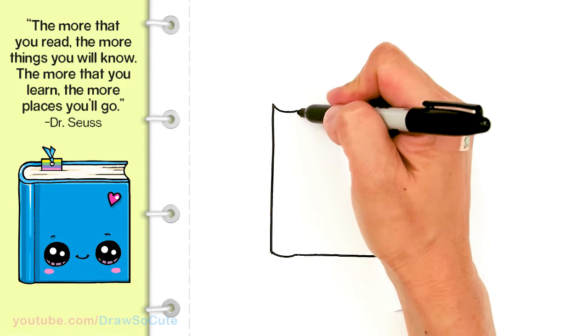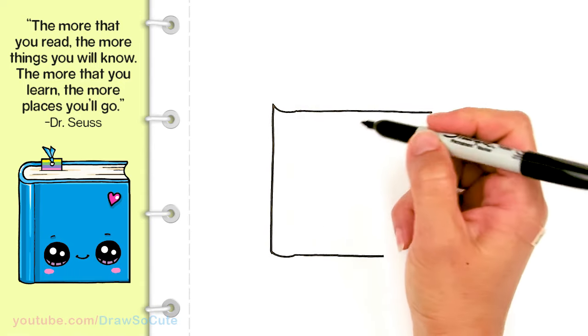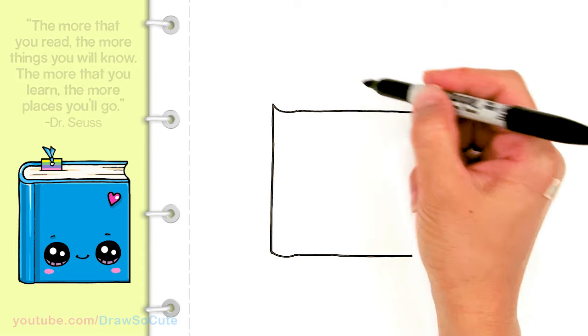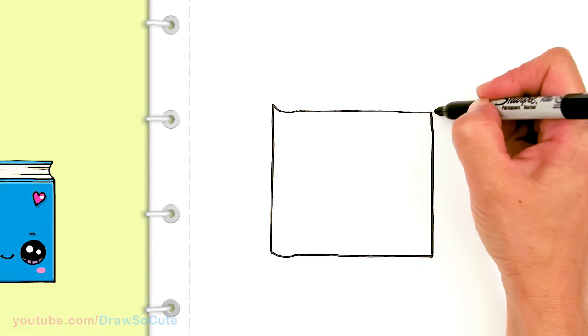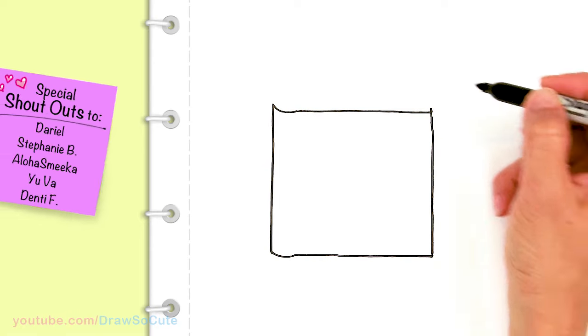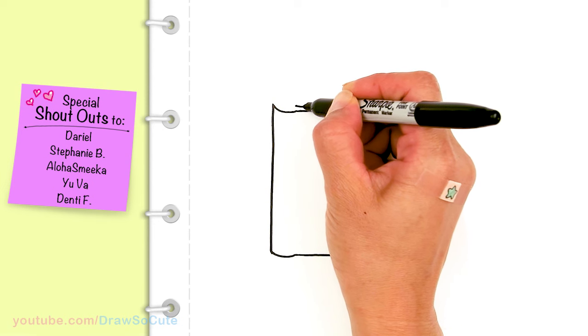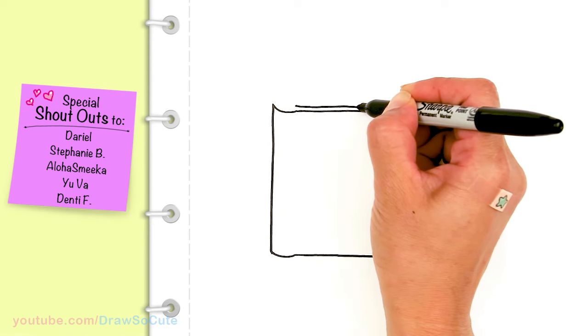So then from there in this area, we're going to very, very lightly... you know what? I'll do that later with a thinner Sharpie. Let's draw the rest of the book first. I'm going to come up right here, just come up a tiny little bit. And from there, I'm just going to draw another straight line right on top.